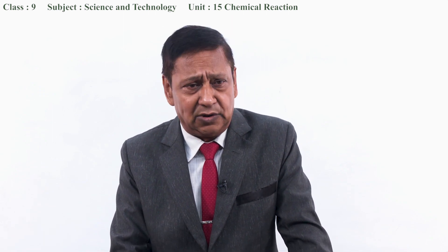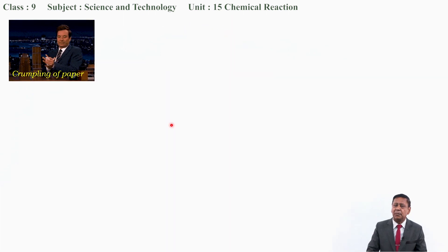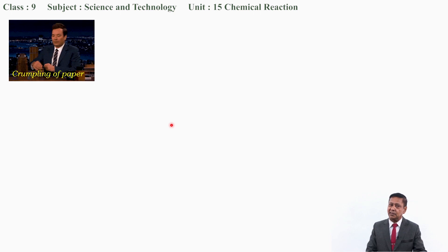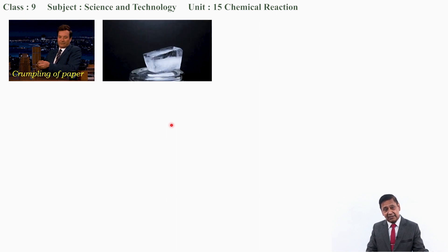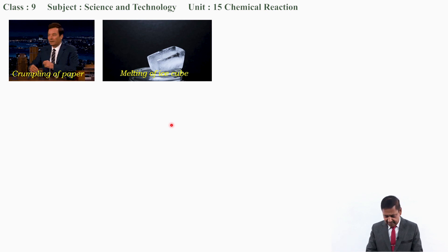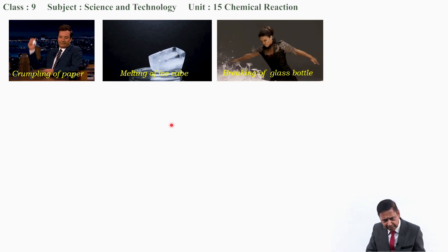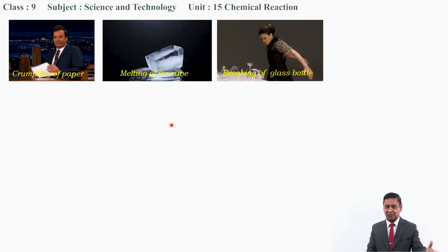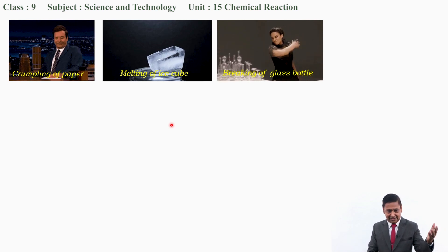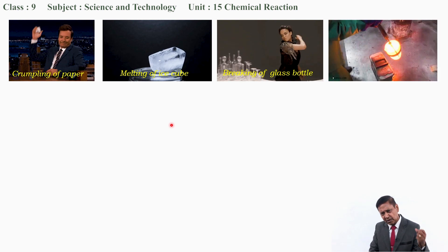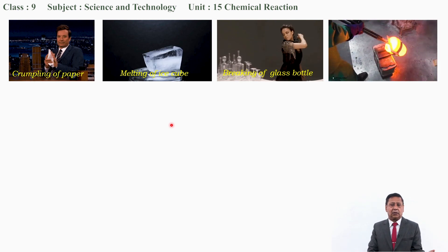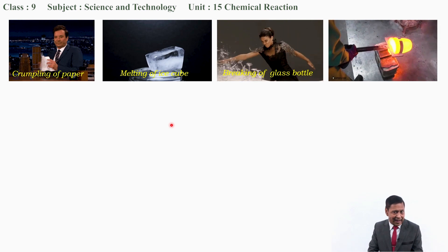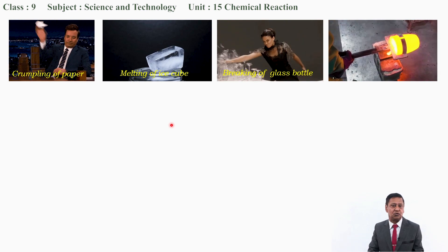Look at this video clip. What is this? Crumpling of paper — a man is very angry and he is crumpling a piece of paper. And look at this another video clip: ice is melting. Here is another video clip: she is very angry, breaking glass bottles and other glasses. And look at this another video clip: gold is melted and it is moulded into a bar.